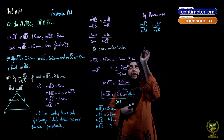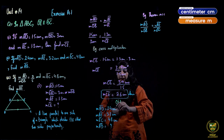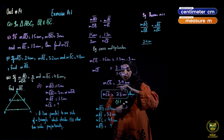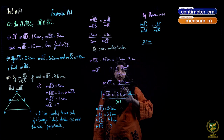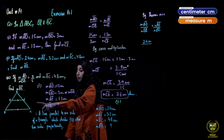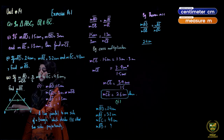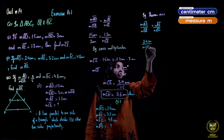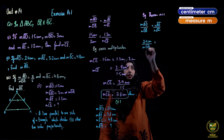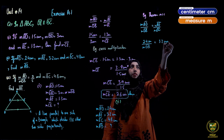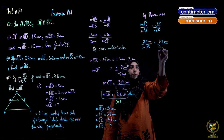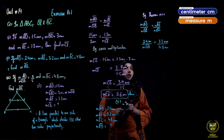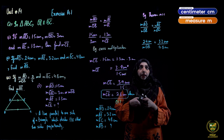Substituting values: AD = 2.4 cm, DB is not given and is unknown. AE = 3.2 cm, EC = 4.8 cm. So to find AB, we first need to find DB. The units will cancel out and we do cross multiplication.